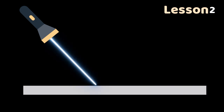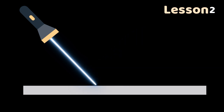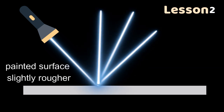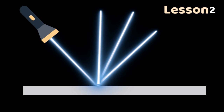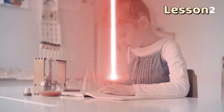If the surface is a polished mirror, the rays will reflect at the same angle at which they originally strike the object. If the surface is a painted surface — slightly rougher — the rays will reflect in different directions. Rough surfaces scatter or diffuse light.